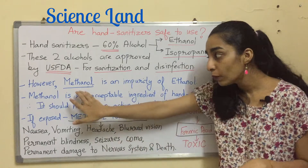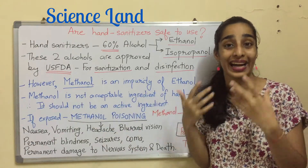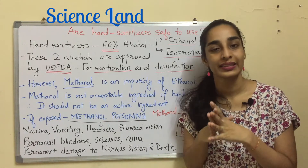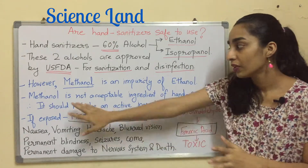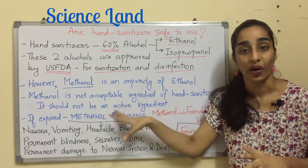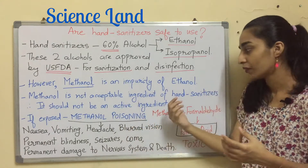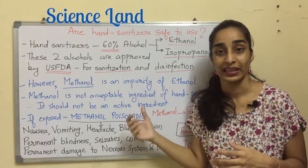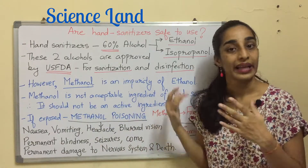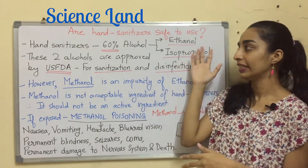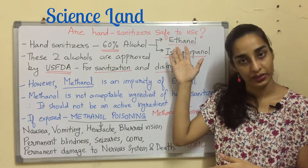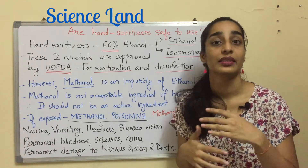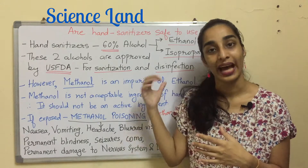Some manufacturers use methanol as an active component in hand sanitizers, but this is very dangerous. Methanol is not an acceptable ingredient of hand sanitizers or disinfectants, and it should not be used as an active ingredient. The active ingredient should be either ethanol or isopropanol.